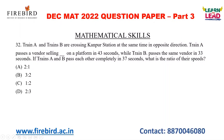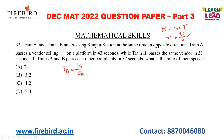Now we are going to see the next question, which is based on a train problem. In a train problem, you should know the basic formula. Distance is equal to speed into time, and time is equal to distance divided by speed. Train A passes a vendor standing on a platform in 43 seconds. So let us take the time taken by Train A to cross a vendor. Here, distance is nothing but the length of Train A divided by the speed of Train A. The time taken by Train A to cross a vendor is 43 seconds, so 43 = length of Train A / speed of Train A.